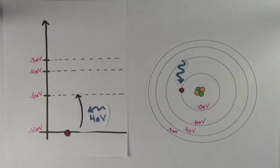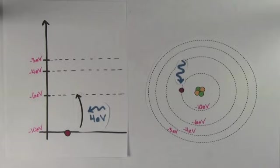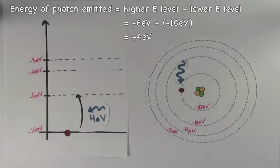In order to find the energy of the photon that was absorbed or emitted, you always take the higher energy level and subtract from it the lower energy level. So in this case we would take negative 6 eV and subtract from it negative 10 eV, which tells us that it would take a 4 eV photon to bump an electron up to that energy level, and the electron would emit a 4 eV photon if it dropped back down from that level.